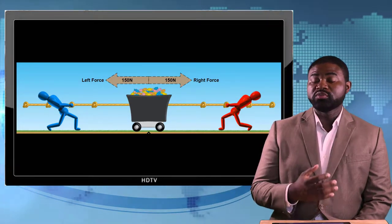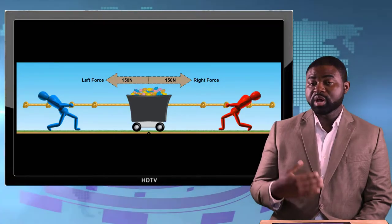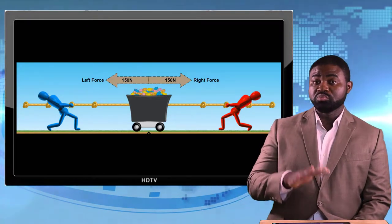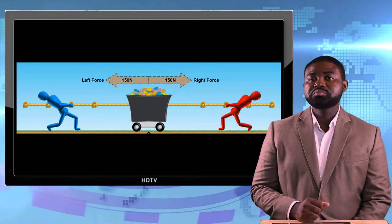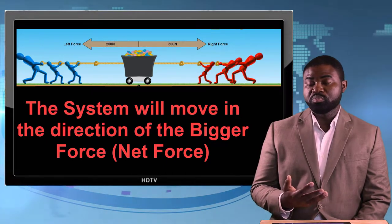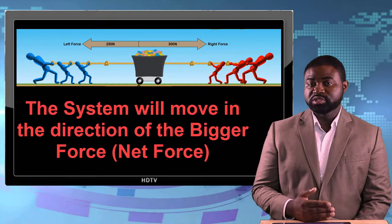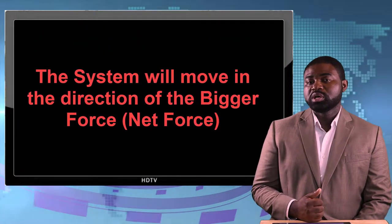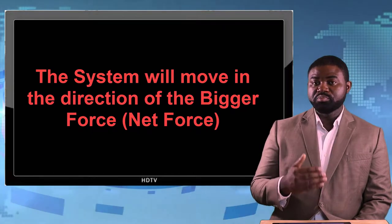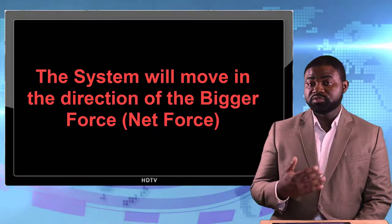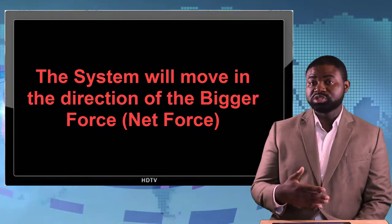If the person on the right and the person on the left assert the same amount of force but in opposite directions, the crate itself will not move. Think about a tug of war — one group pulls to the right, one group pulls to the left. The group that wins is the group that asserts the bigger force, and the system will eventually move in the direction in which the net force exists.